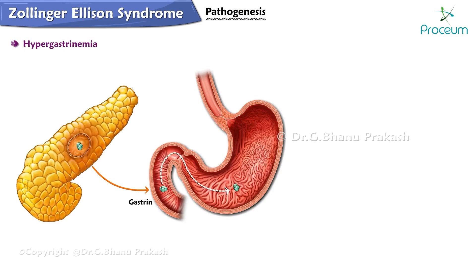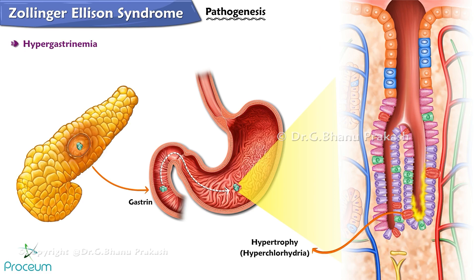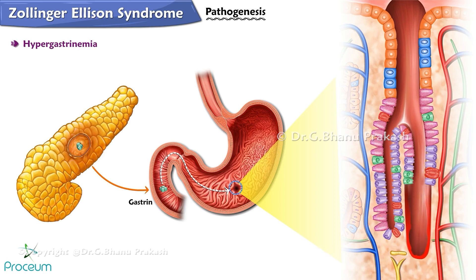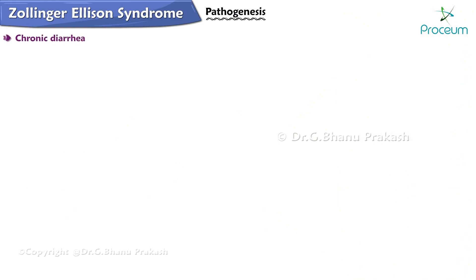In the pathogenesis of hypergastrinemia, gastrinomas stimulate parietal cells, which increase in number and size, leading to hypertrophy and maximal acid output. This gastrin itself stimulates more acid release, and an overall basal acid output spike is seen. This large quantity of acid leads to ulceration of the gastrointestinal mucosa.